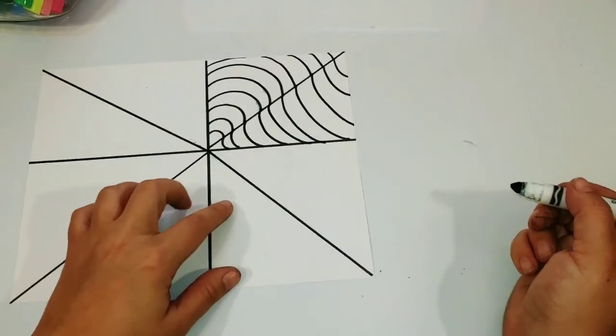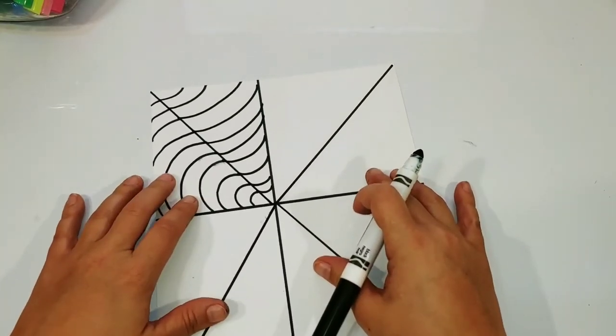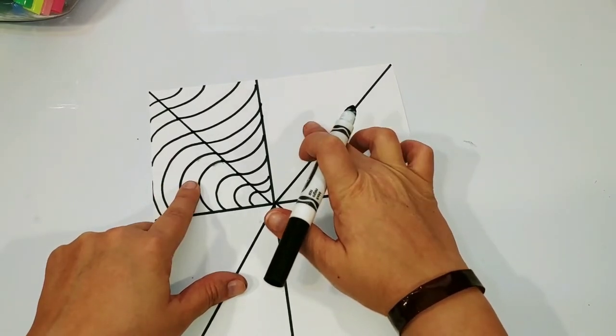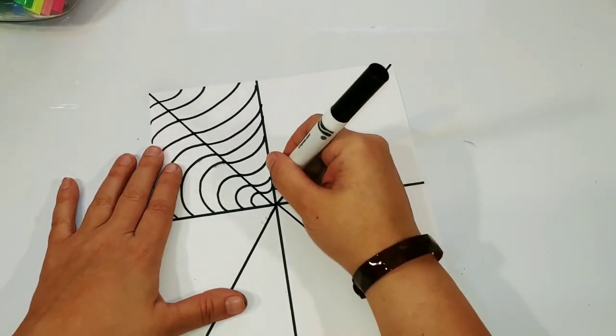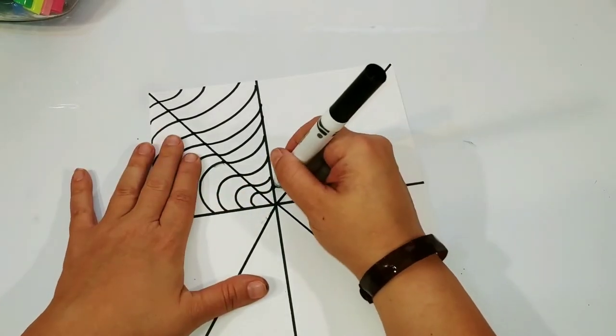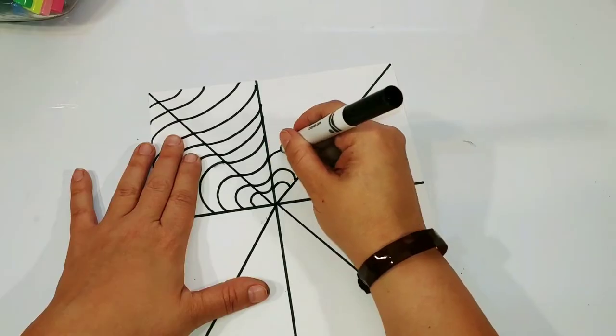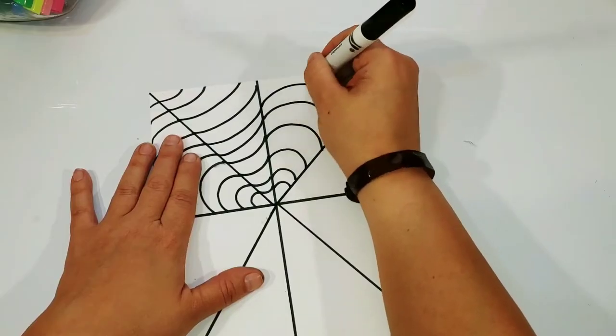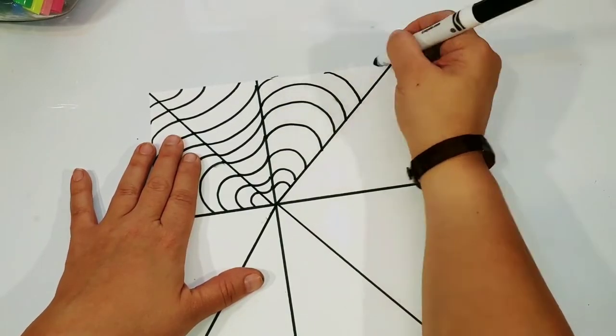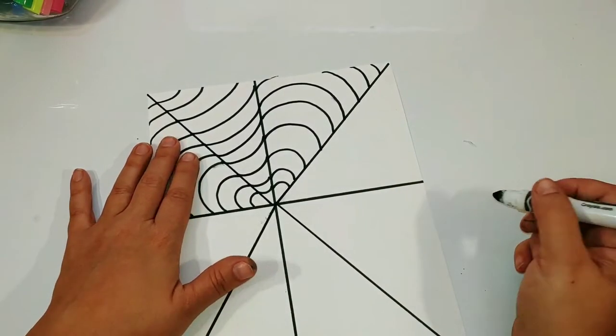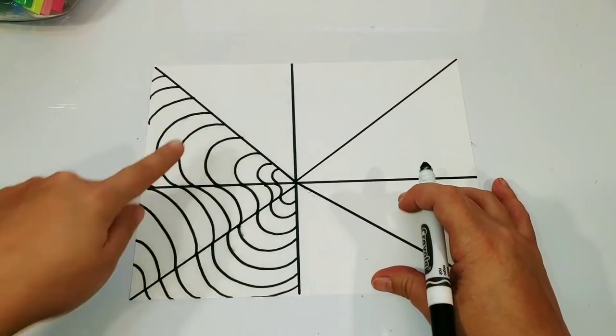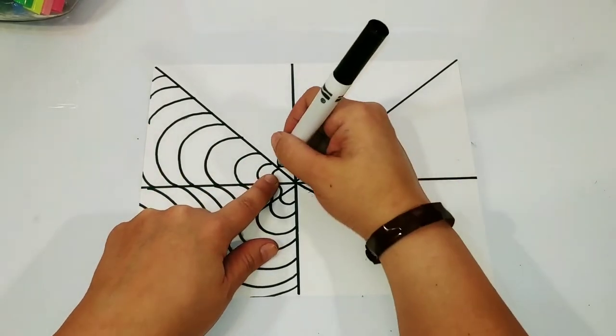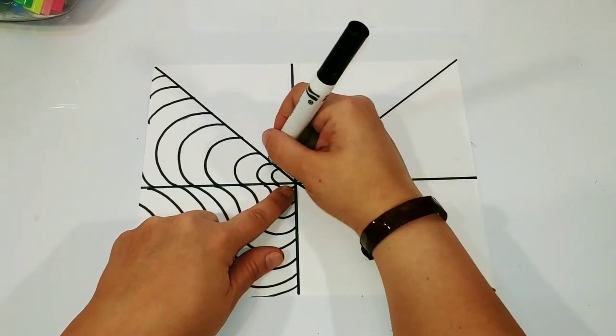That way you're still drawing an arc. Again, we want to connect the lines, we want everything to touch. Moving to the next section, we're going to go back to the rainbow arc, connecting our new line to the edge. We want to make sure all of our lines are touching.